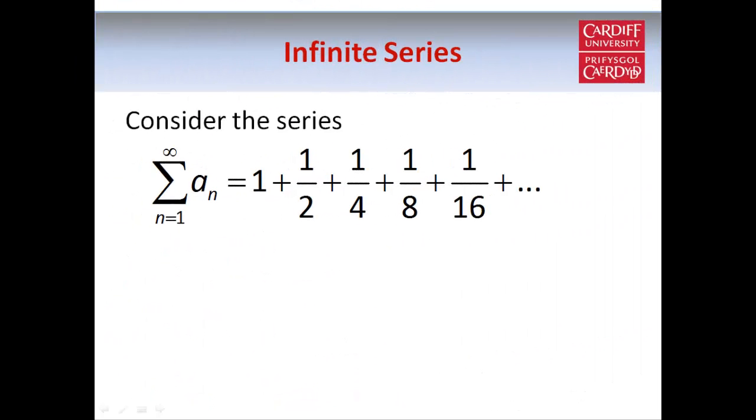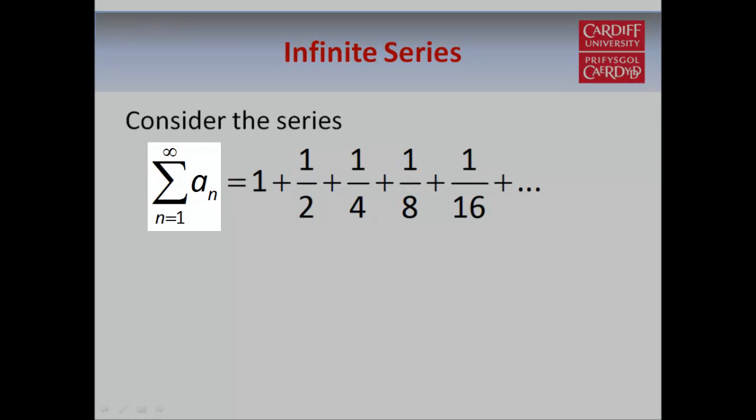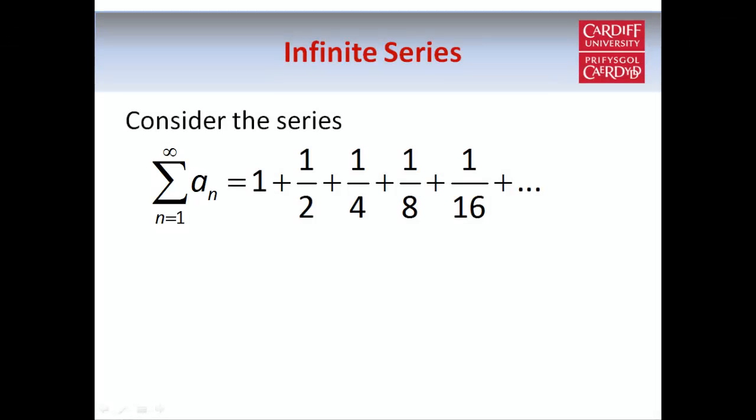We usually use this notation for a series, the capital sigma notation, which represents a summation, so this simply means that we refer to the terms in our series as a1, a2, a3, and so on. So in this particular example, a1 is the first term in our series, which is 1, a2 is the second term, which is a half, and so on.